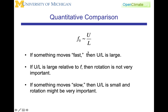The time scale we derive from problems with motion is going to be U over L, where U is a characteristic velocity. In the case of the airplane, that velocity was 500 miles per hour, and L is the characteristic length scale — 1,000 miles. U over L is going to be something like 1 over 2 per hour, but you need to convert to per seconds and compare that with F-naught. If something is moving fast, U over L is large; if U over L is large relative to F, then rotation is not very important. If something is slow, U over L is small, and rotation might be very important. It is the comparison of U over L to F-naught which lets us make that determination.